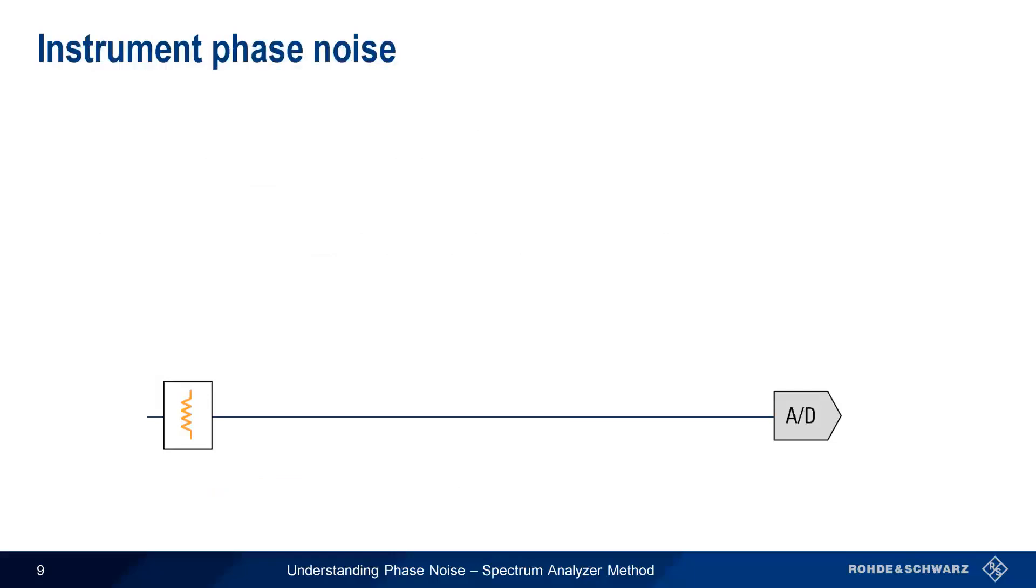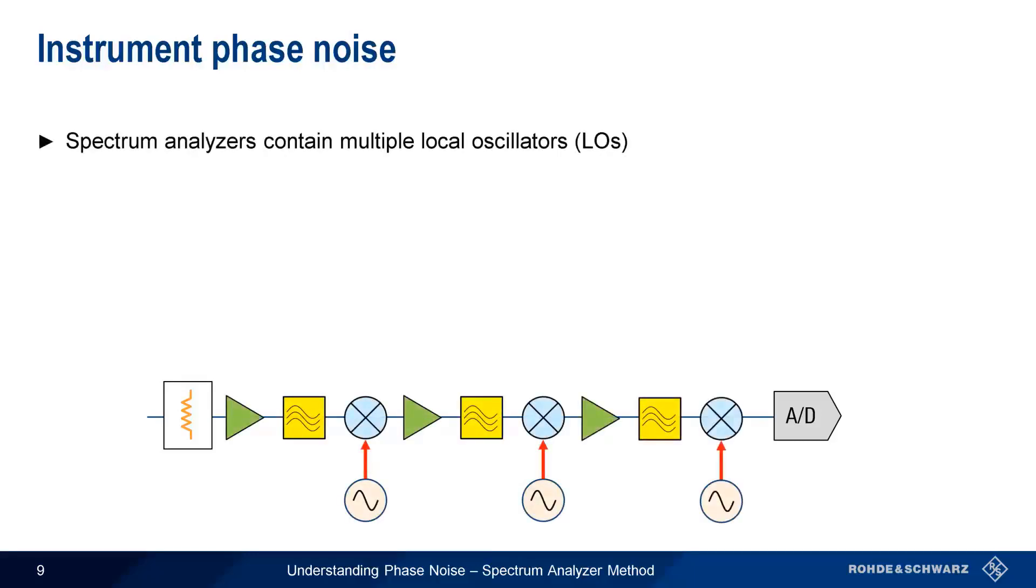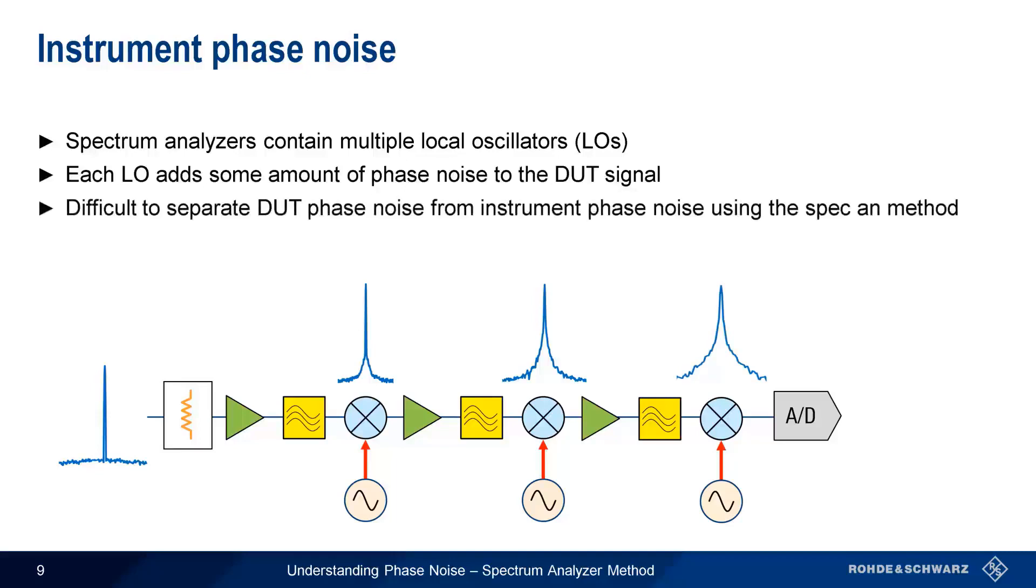Another important spectrum analyzer specification is the phase noise of the analyzer itself. Spectrum analyzers usually contain multiple local oscillators, or LOs. Like all other oscillators, each of these local oscillators has a certain amount of phase noise. And this phase noise is added to the phase noise of the DUT signal as it moves through the analyzer. One of the limitations of the spectrum analyzer method is that it's difficult to separate or distinguish the phase noise present in the original signal from the phase noise added by the instrument.